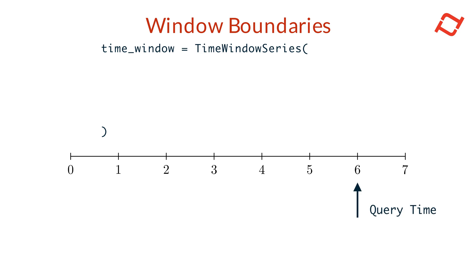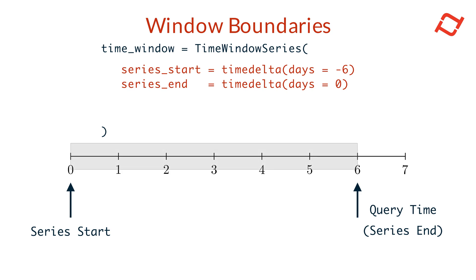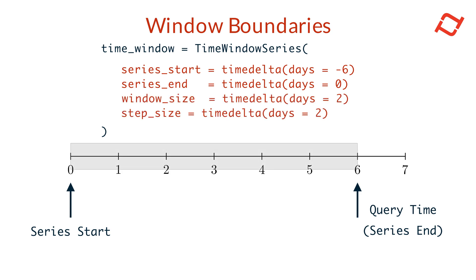You can describe a time window series using the following parameters. Series start specifies the start of the series of windows and series end specifies the end. Here we have a six-day time range that starts six days before the query time and ends at the query time. The interval between series start and series end specifies the time range of the series. Window size specifies the size of each smaller window — here we use two-day windows over our six-day time range.